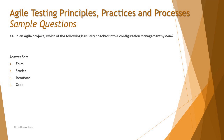Let's move on to Question 14, which asks: in an agile project, which of the following is usually checked into a configuration management system? That's a little tricky one. Configuration management, as covered in the foundation level syllabus, is a tool that manages version control, manages the history of revisions, tracks changes, and talks about the unique identification of each item as well as the relationships between them.